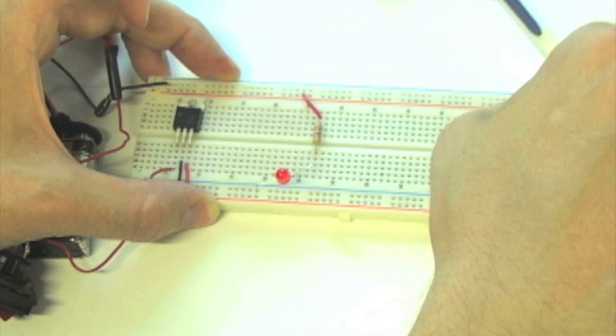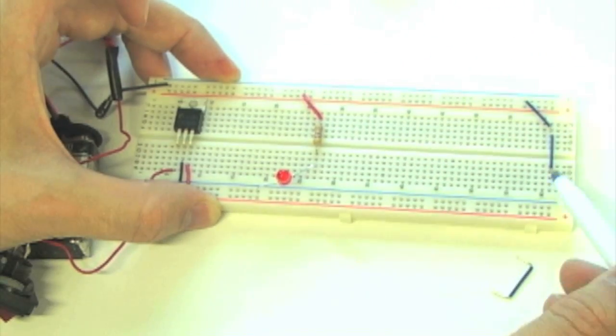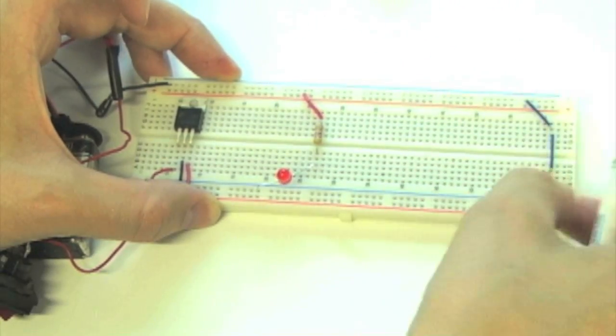Connect the top ground rail to a row on the top half of the breadboard, bridge the trough between row sections, and connect the bottom row to the bottom ground rail.